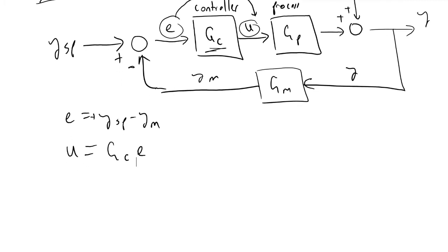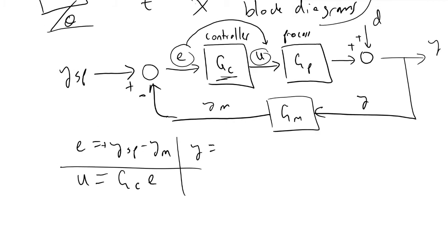And continuing on, we're able to derive these kinds of relationships. The variable Y, our output, is equivalent to D plus GP×U. And finally, Y sub M is equivalent to GM times Y.